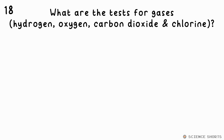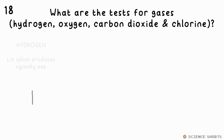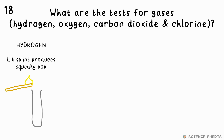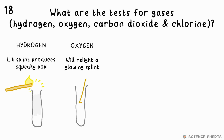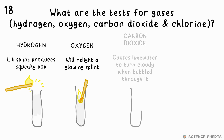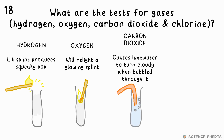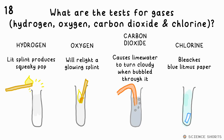Question 18. What are the tests for hydrogen, oxygen, carbon dioxide, and chlorine? A lit splint will cause a test tube of hydrogen to produce a squeaky pop. Oxygen will relight a glowing splint. Carbon dioxide will cause limewater to go cloudy when bubbled through it, and chlorine bleaches blue litmus paper — it'll turn it white.